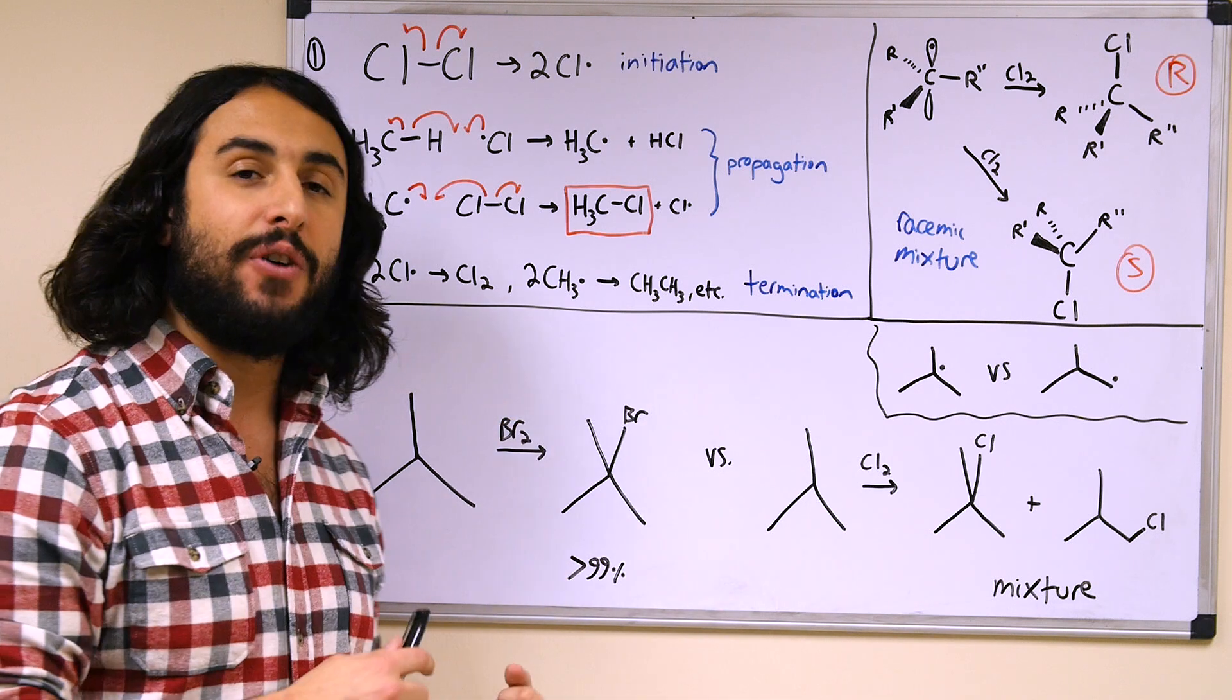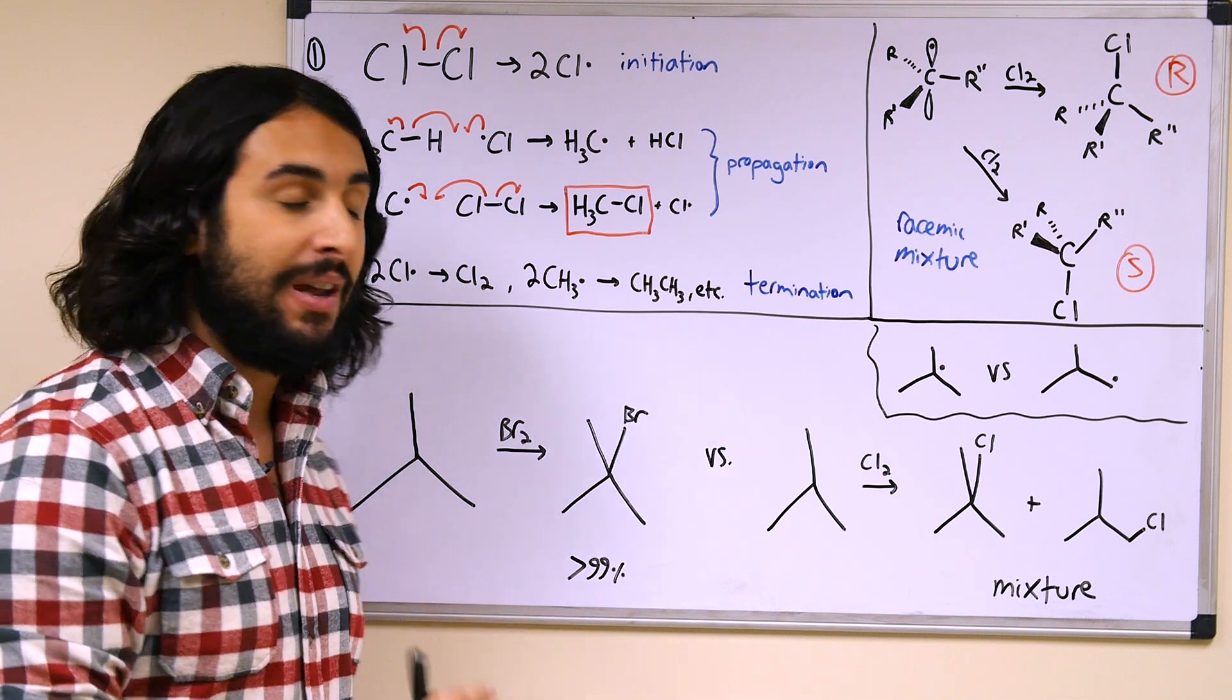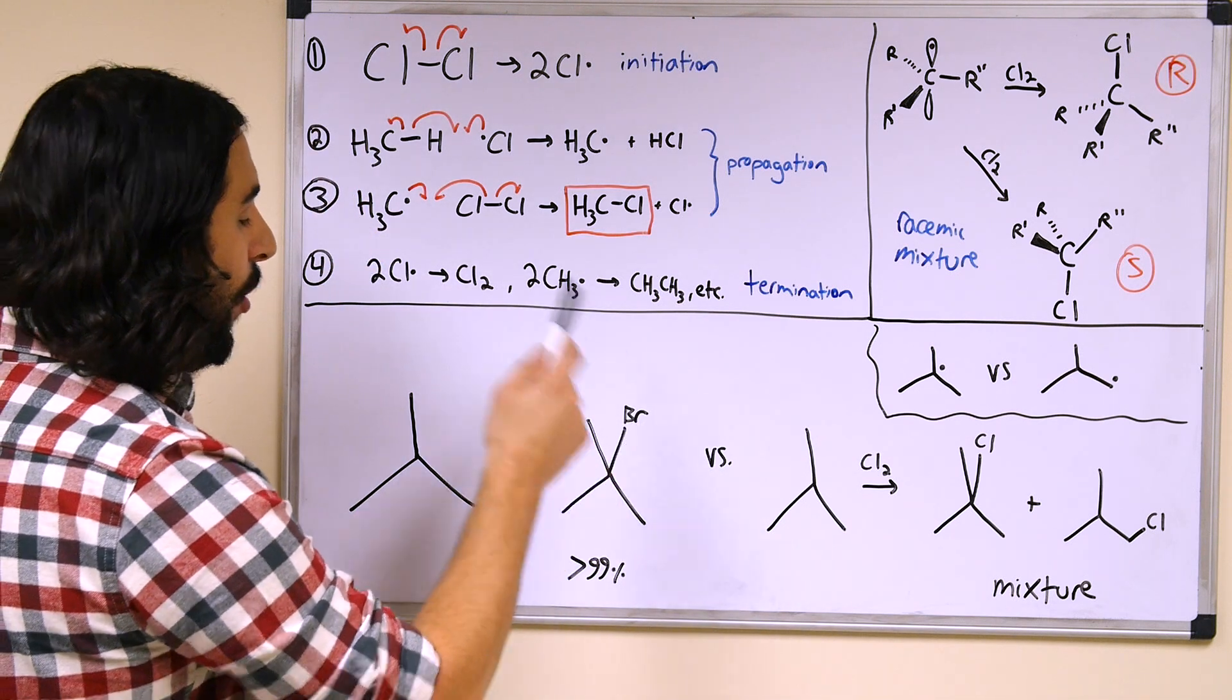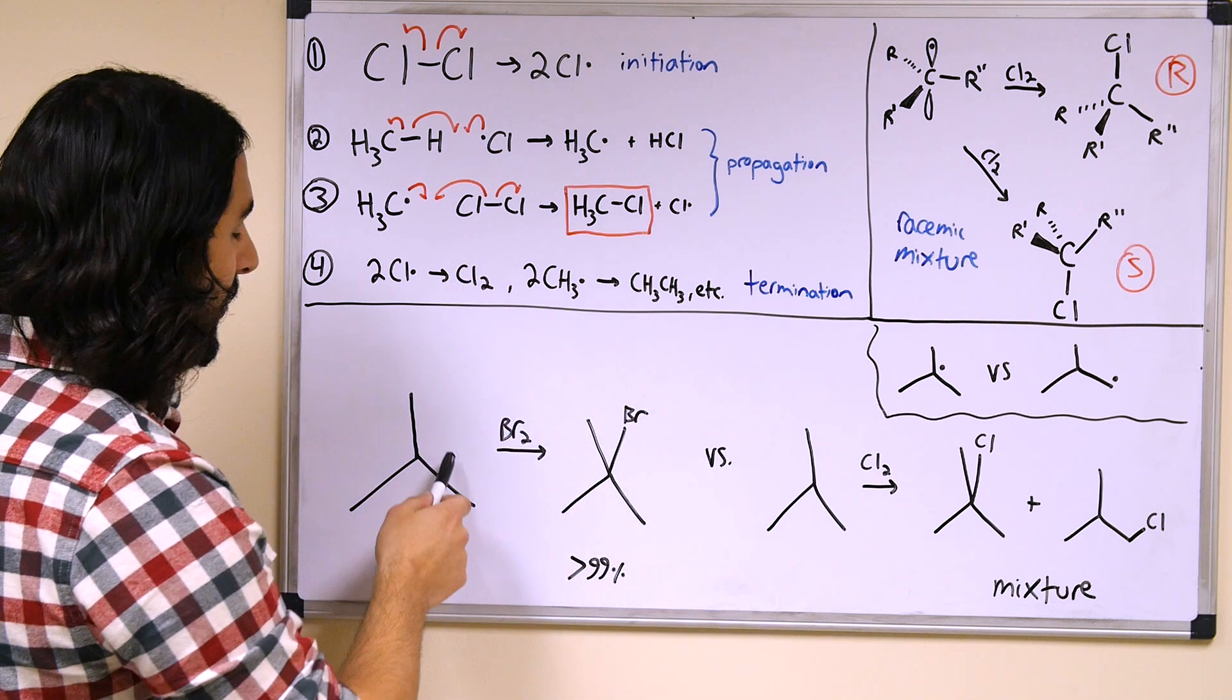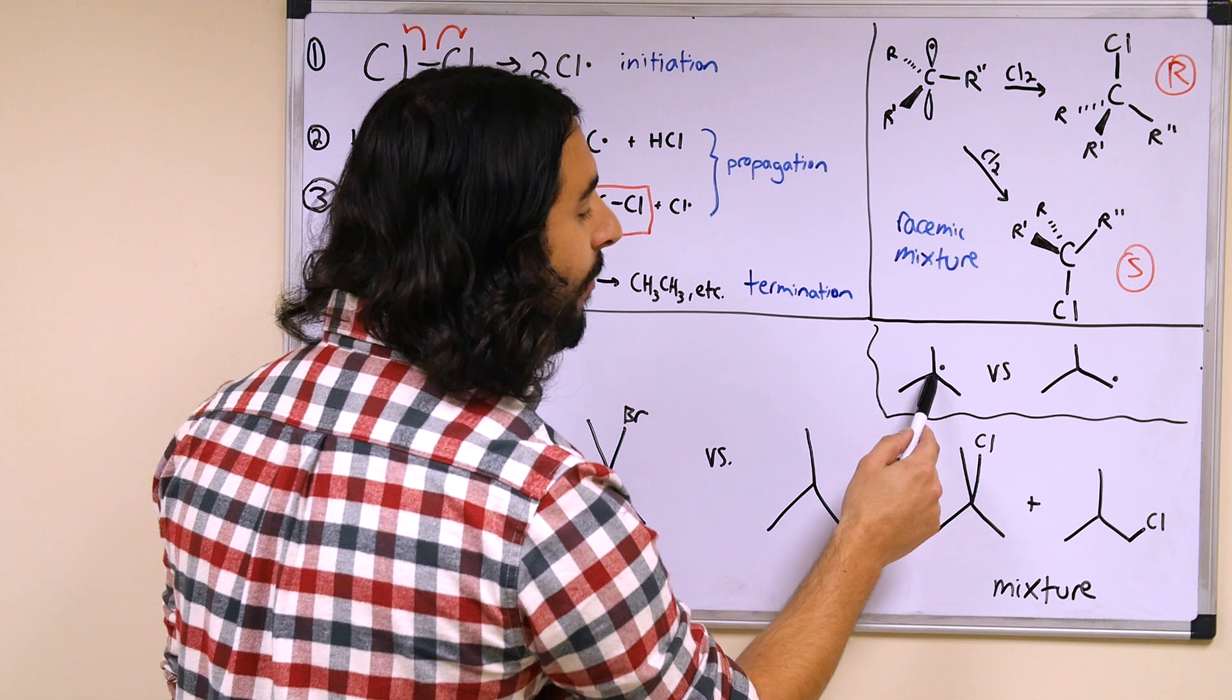That means that a bromine radical is more likely to go ahead and extract this tertiary hydrogen here, generating the more stable tertiary alkyl radical. That is the more favorable pathway, that is a lower energy intermediate than the other possibility.